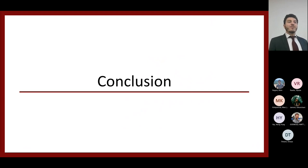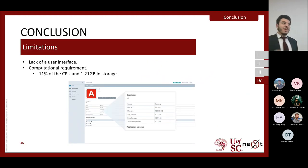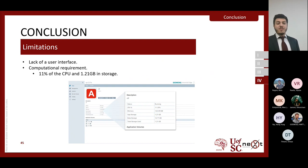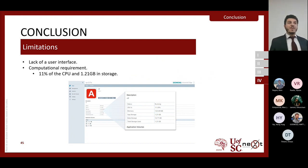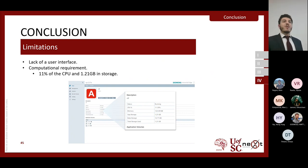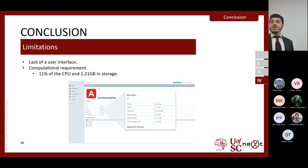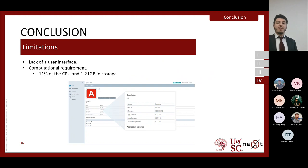Now let's conclude and tie this back to manufacturing. First, regarding limitations: the application we developed has two major limitations. One is the lack of a user interface — any mapping required must be done by a technician with knowledge of RDF Mapping Language. The second is the computational requirement on our resource-constrained device: about 11% of CPU and 1.2 gigabytes of storage. This is one aspect we look to optimize further to use fewer resources on the device.